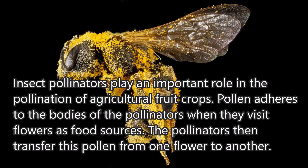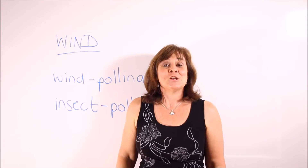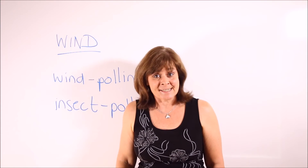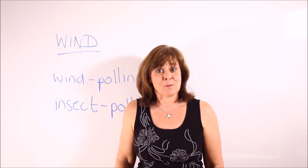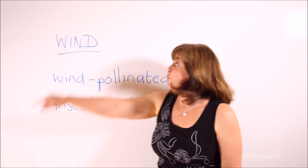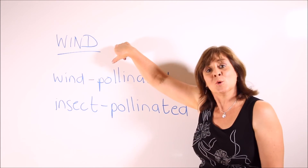Here is a sample sentence: Insect pollinators play an important role in the pollination of agricultural fruit crops. Pollen adheres to the bodies of the pollinators when they visit flowers as food sources. The pollinators then transfer this pollen from one flower to another.